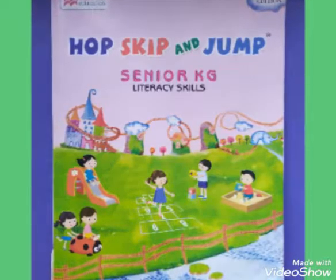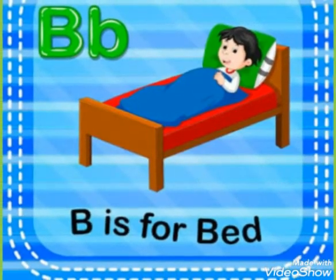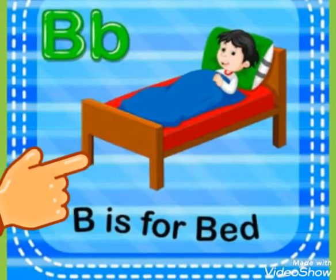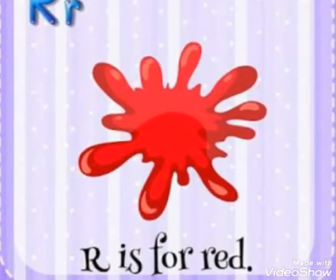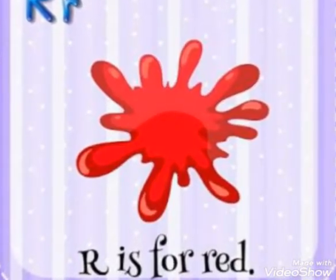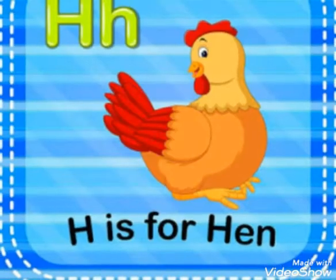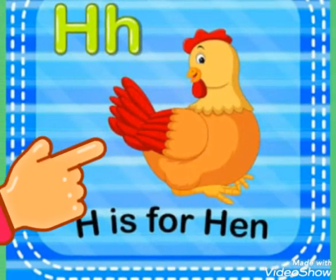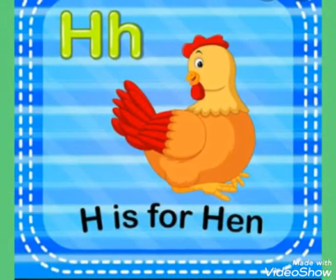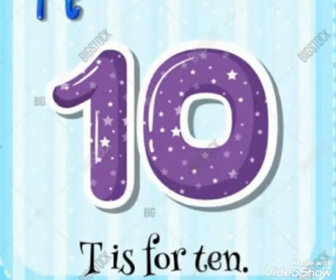Here we go. B is for bat. R is for rat. H is for hen. T is for den.